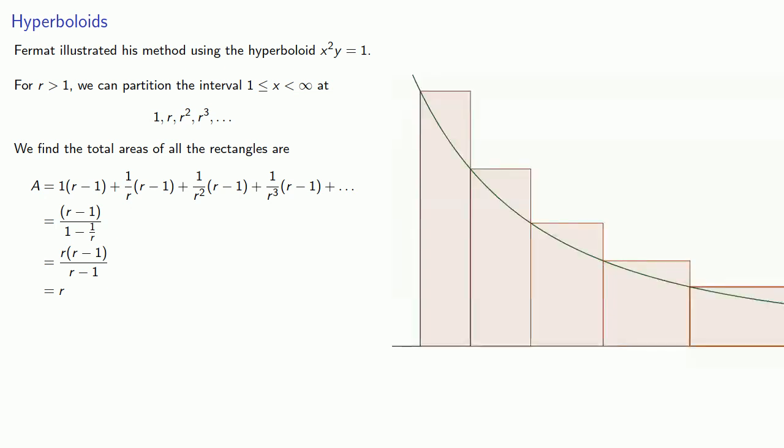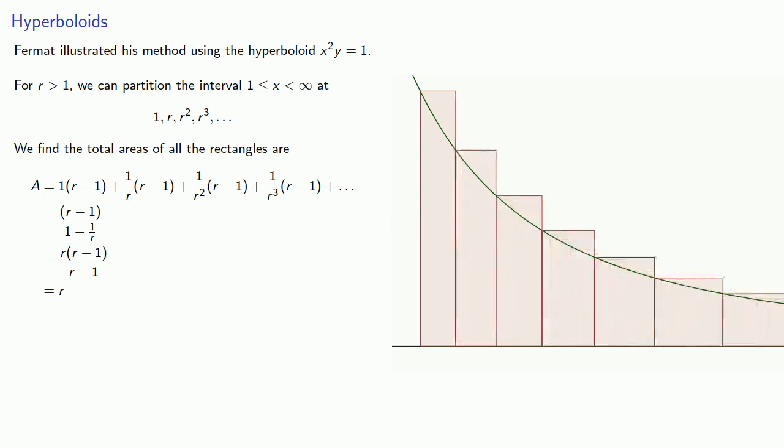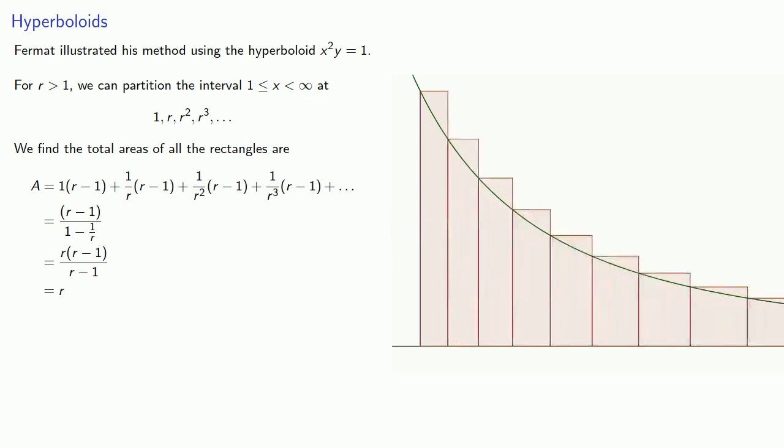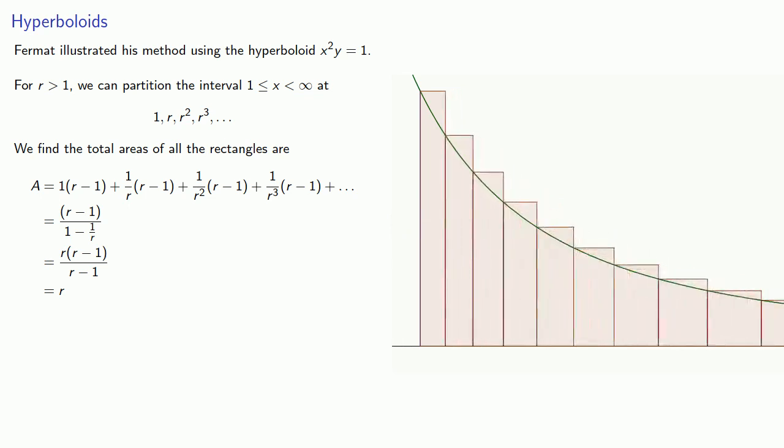Now notice that we haven't actually found the area under the curve. We found the area of this, we'll call it a staircase region. But notice that as r gets close to 1, the rectangles get narrower and narrower. And so the sum of all of these areas gets closer and closer to the actual area under the curve. So in modern terms, as r gets close to 1, our area gets close to 1 as well.